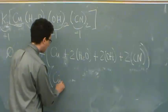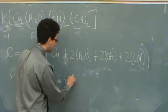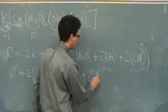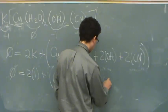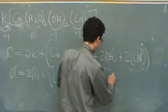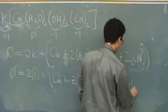We don't know copper. Water is two times zero. Hydroxide is two times minus one. And then cyanide is two times minus one.